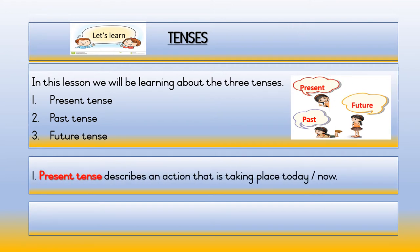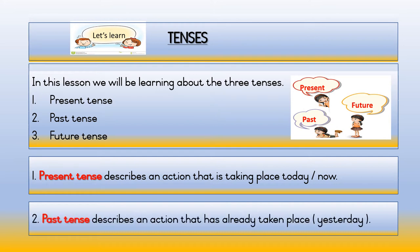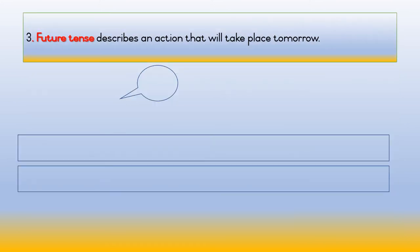Number one, present tense, describes an action that is taking place today — that is now. Number two, past tense, describes an action that has already taken place — that is yesterday. Number three, future tense, describes an action that will take place tomorrow.